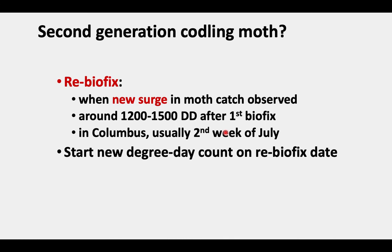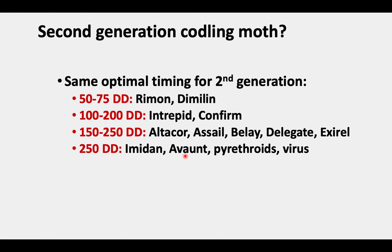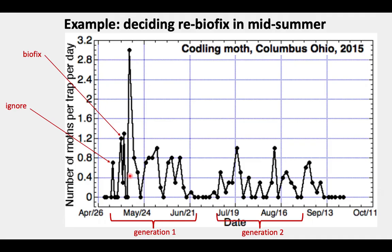We start a new degree day count on that re-biofix date. Then our target for spraying is the same for the second generation as for first — it's 50 to 75 degree days for Rhyno, on up to 250 for Imidan and Avant. Same as we just saw for first generation.